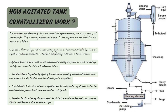After nucleation comes agitation. The agitator inside the crystallizer keeps everything uniform — it's like stirring soup so that nothing sticks to the bottom. This ensures that all the crystals grow evenly and not in big lumps. The primary concern of the agitator is to achieve uniform mixing and to prevent uneven formation of crystals.